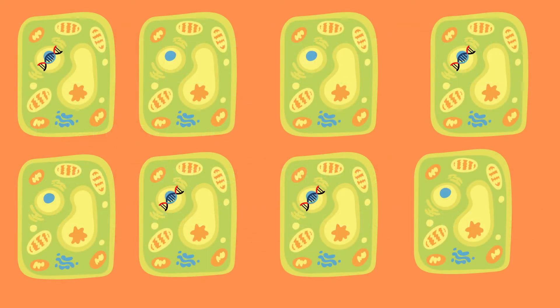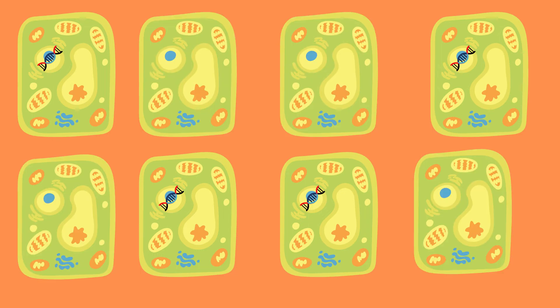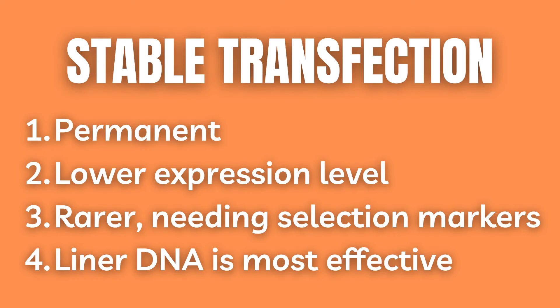The best way to select successfully transfected cells is to include a selectable marker such as an antibiotic resistant gene or something similar. Then one can expose cells to the substance that successfully transfected cells have become resistant to, in order to sort out unsuccessful cases where the gene has not been successfully transfected. In addition, one can use a marker that causes morphological or phenotypical changes. To successfully perform stable transfection, linear DNA is preferable to supercoiled DNA.